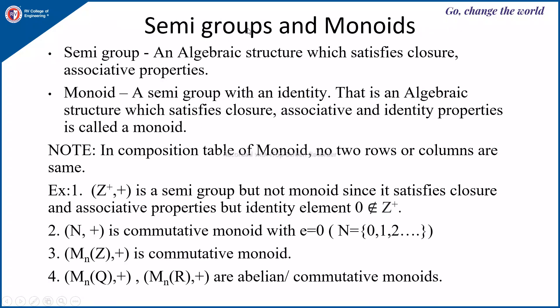Next are semigroups and monoids. We have seen groups, and now we will see what semigroups and monoids are. A semigroup is an algebraic structure which satisfies the closure and associative properties. A monoid is a semigroup with an identity — that is, it is an algebraic structure which satisfies closure, associative, and identity properties.